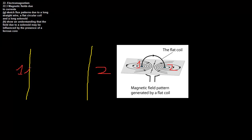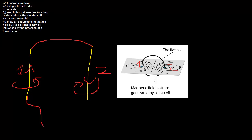Over here the current is going upwards. Using our right-hand grip rule, we can see the magnetic field goes like that. And using our right-hand grip rule when it's coming down, we can see the magnetic field goes like that - which is shown in this picture. What's really interesting is that through the middle we get a straight magnetic field going straight through, so we have a uniform magnetic field going through the centre of the coil, with some interesting effects around the outside. This is because the magnetic fields are kind of repelling each other.